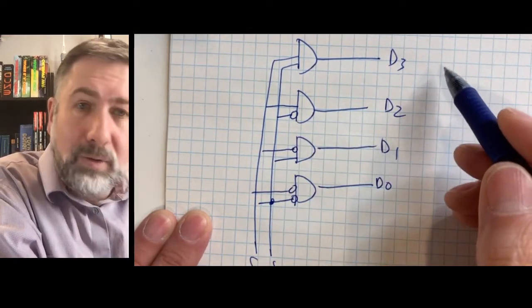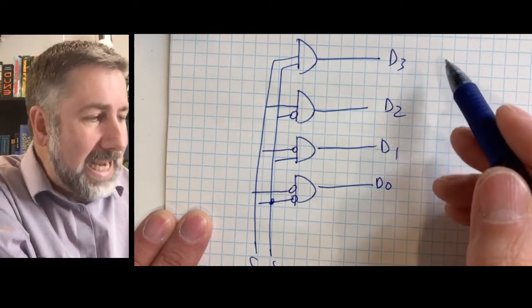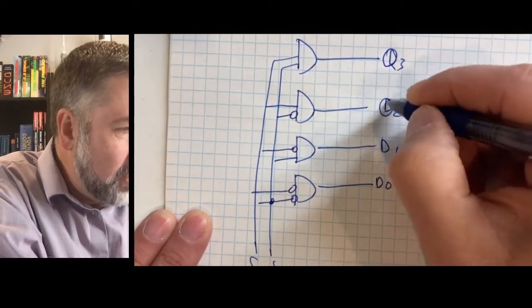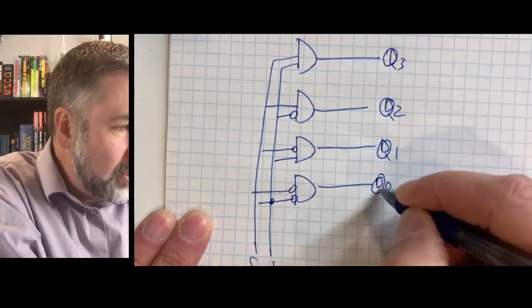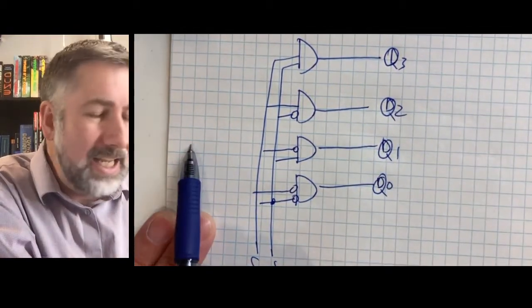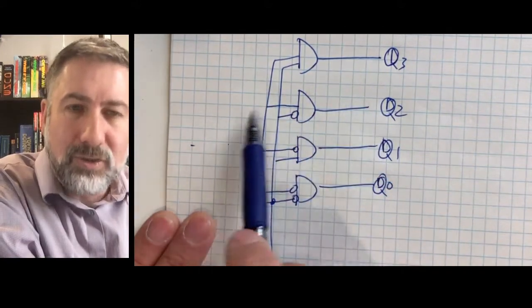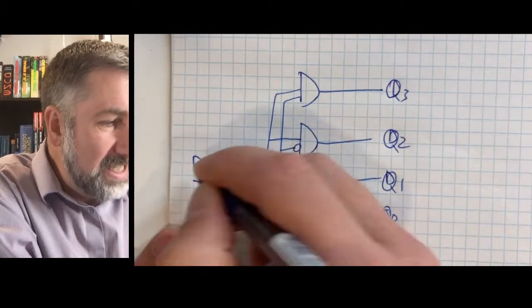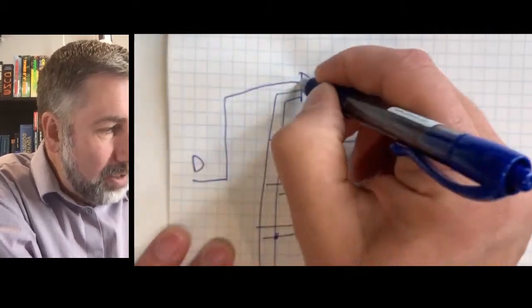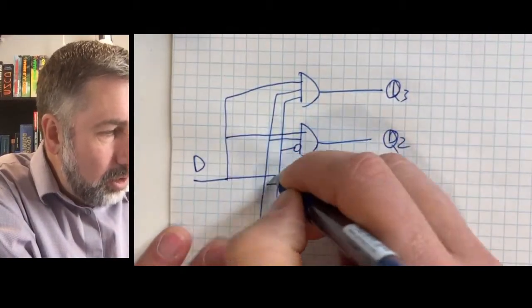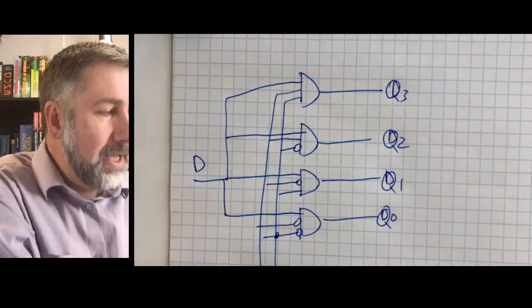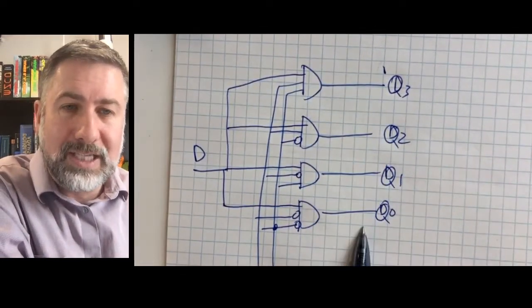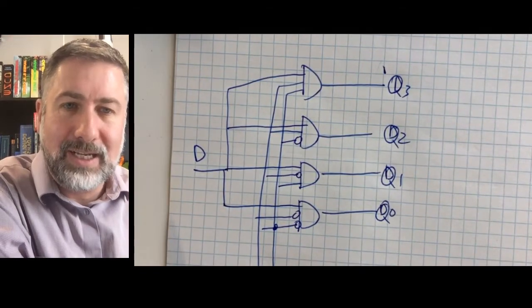But now what we have to do is route our data line. We should call these q outputs, q3, q2, q1, and q0, because what we're doing is we're taking an input line and we're routing it to one of these based on the selector combination. So we'll call this d, this is our data line, and we're going to run that data line to all four of those AND gates. Then depending on which min term is active, only one of these outputs will contain the data on that data line.